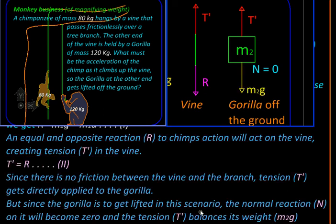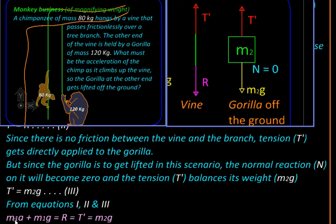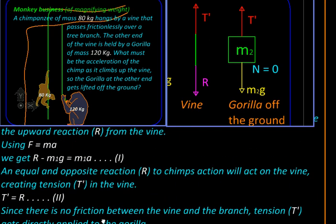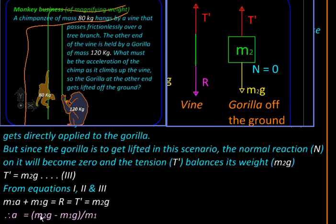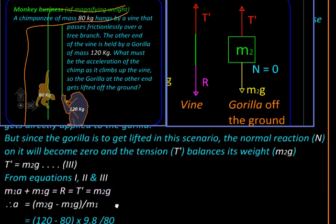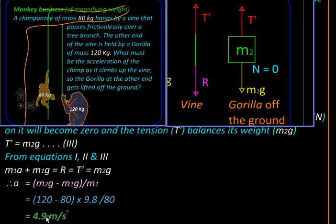Combining these three equations we will get m1g + m2g = R. From equation one, R = T' and T' = m2g. We can simplify and solve for the unknown a by substituting m1 and m2 values. By solving we get the acceleration of the chimpanzee to be 4.9 meters per second squared.